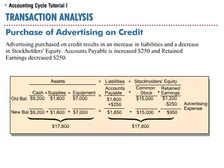SoftBite receives a bill for $250 from the Daily News for advertising. It will pay the bill at a later date. This results in an increase to accounts payable of $250 and a decrease to retained earnings of $250. The decrease is the result of an advertising expense.